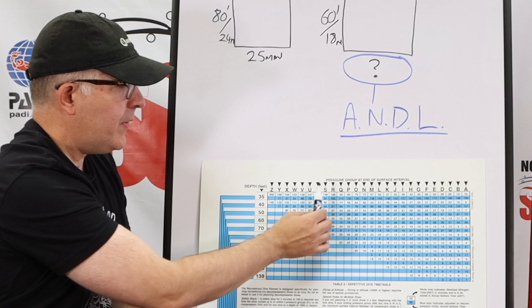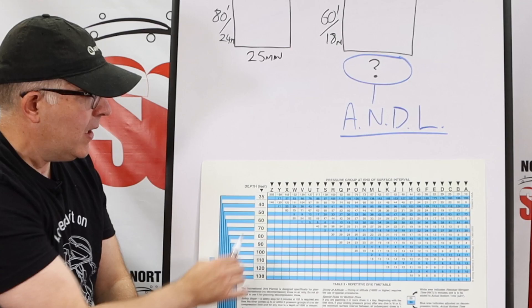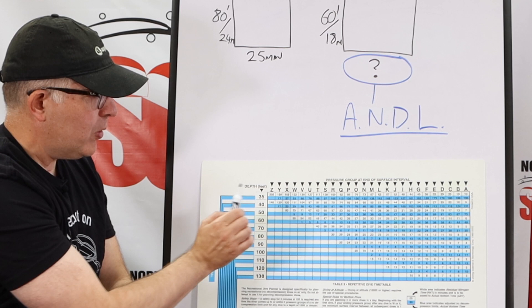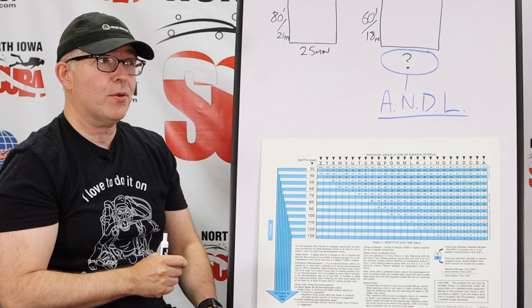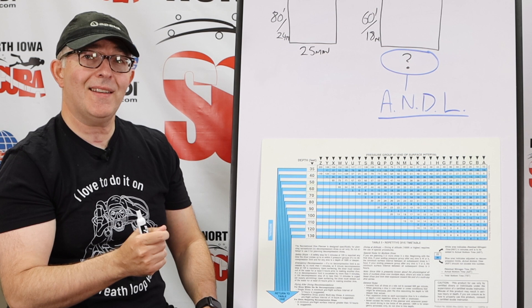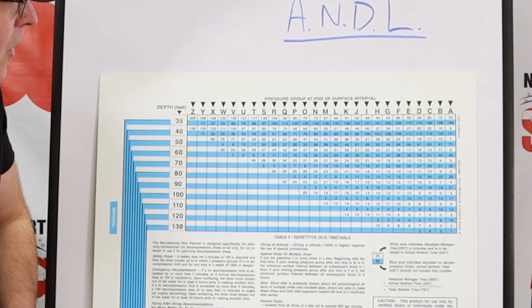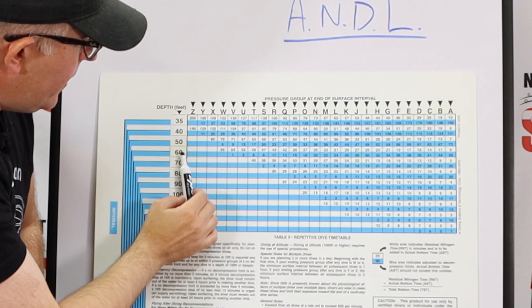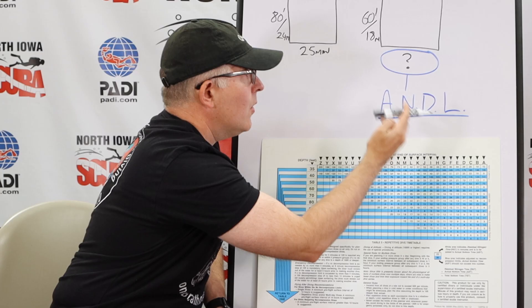There are two ways that we can do this — we can use the front side or the back side of the table. Let's go to table three. Along the top, we have the pressure group at the end of the surface interval indicated by all these letters. Then we have the depth of the subsequent dive that we want to make. We have white boxes and blue boxes. The white boxes indicate the residual nitrogen time that this diver has from his previous dive. The blue boxes — think of those as if you're underwater, it's blue. This blue box indicates our adjusted non-decompression limit. So if we want to be an I diver diving to 60 feet or 18 meters, we find I and 60 feet where those two coincide, and our adjusted non-decompression limit would be 30 minutes.